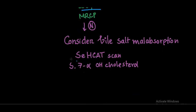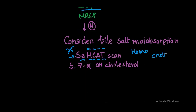If pancreatic tests are normal, we consider bile salt malabsorption. For this we do a specialized test known as the SeHCAT test — the 75-selenium homocholic acid taurine test. You can also do serum 7-alpha hydroxycholesterol studies.